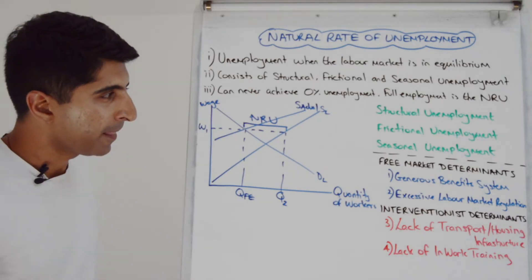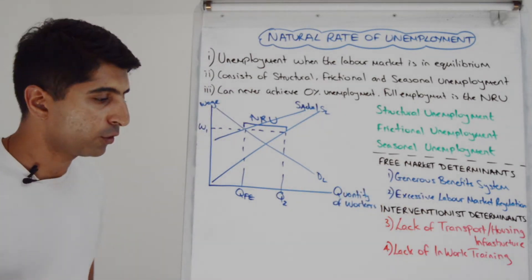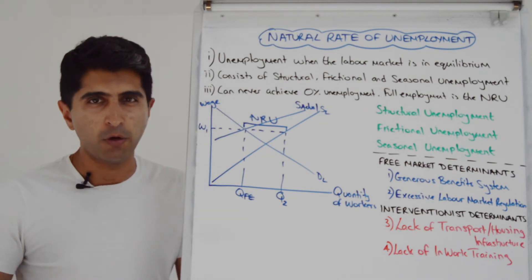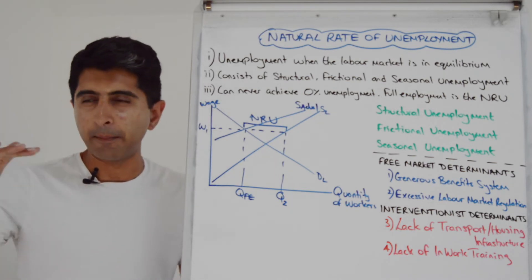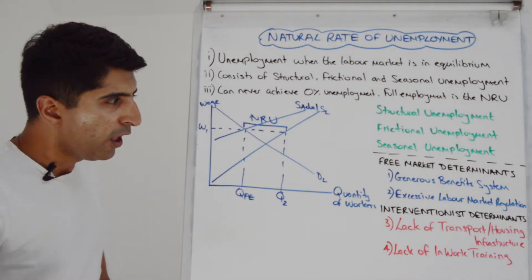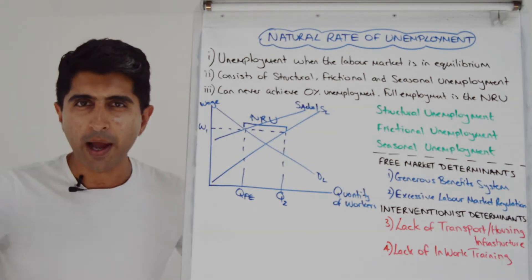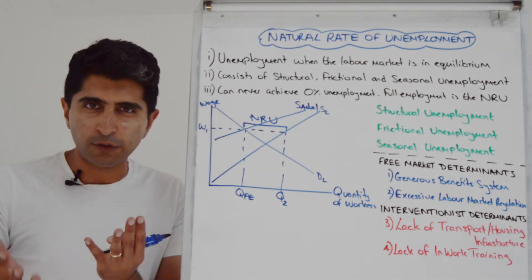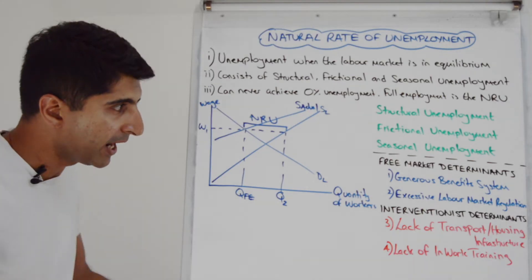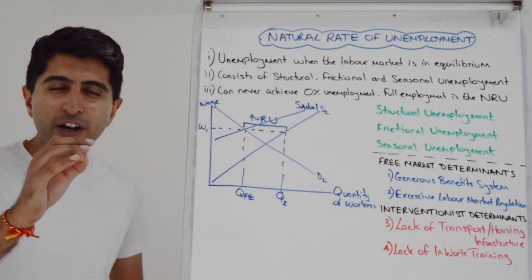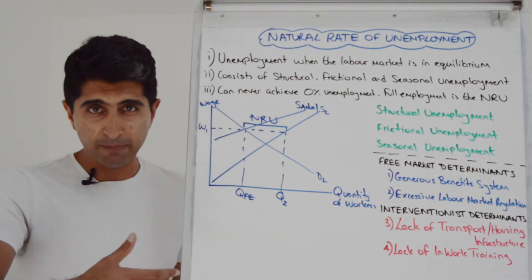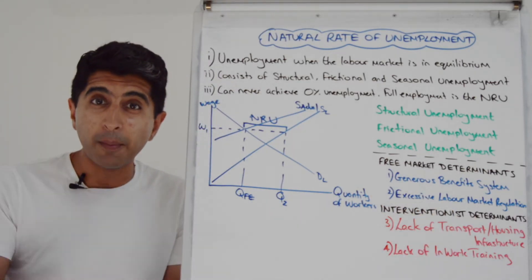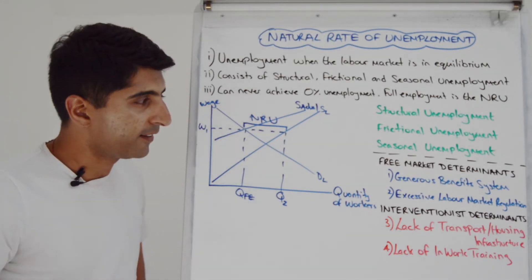An interesting question is what determines the natural rate. There are countries with very high natural rates — take France and Spain, some of the highest natural rates in the world — versus countries like the UK and the US, who have significantly lower natural rates. What determines the natural rate is a big debate. Free market economists blame government intervention, whereas interventionist economists blame market failures.